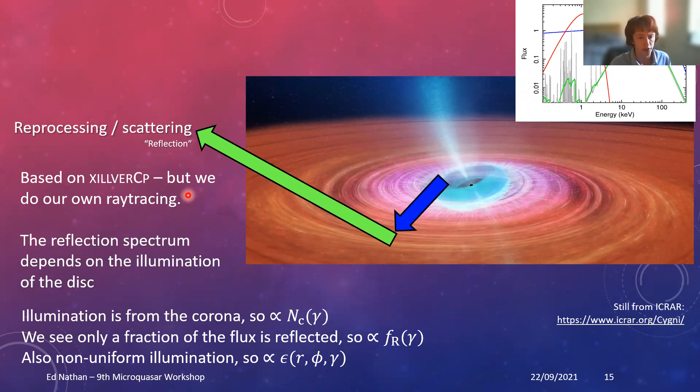Rather than just one parameter, we've now got five: the phase average, two amplitudes, and two phases. That can encapsulate this varying in two harmonic motion, and we do that for all these three components. We also want to consider the reflection. This is based on XILLVERCP, but we do our own ray tracing. This is going to vary somewhat on the illumination of the disc from the corona. We're going to say that's proportional to the coronal flux, which we've already got varying.